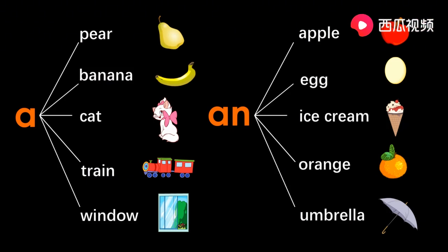在以 A、E、I、O、U 开头的单词前，用 an，表达一个的意思，其他的都用 a。